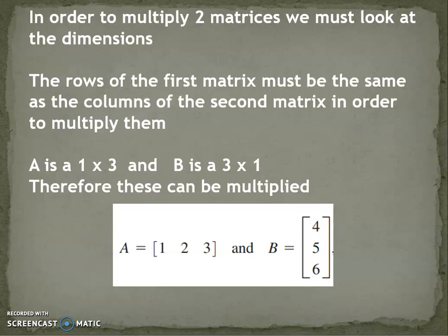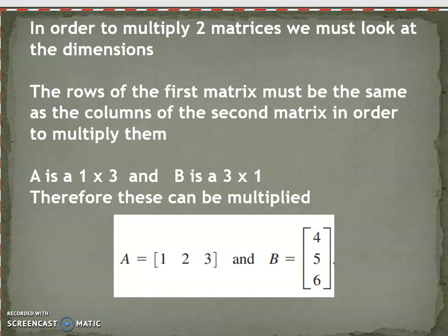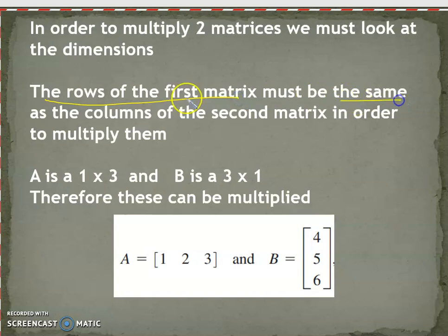This lesson is on multiplying matrices. A couple of pieces of information are very important. In order to multiply two matrices, you have to look at their dimensions. When you are multiplying matrices, you have to look at the dimensions so that the rows of the first matrix are the same as the columns of the second matrix.